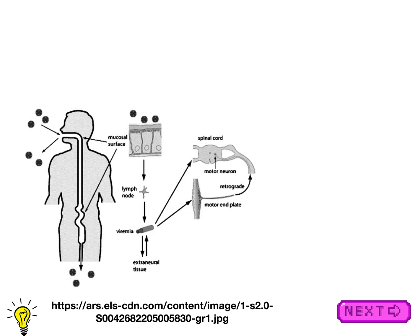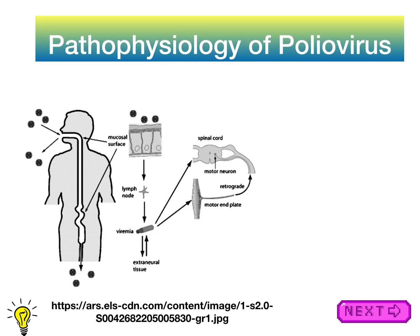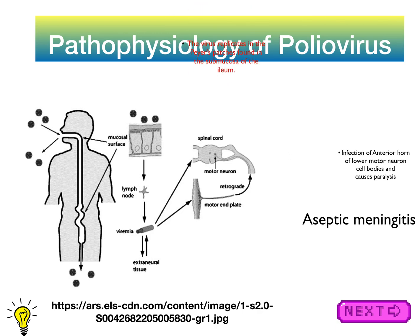Looking at this diagram, the pathophysiology is as follows: the virus initially replicates in the tonsils or the Peyer's patches — tonsils also have lymphoid tissue. The virus can then spread to the blood and across the blood-CNS barrier to the anterior horn of the spinal cord. Because of initial replication in the tonsils, the virus can actually also spread by respiratory secretions, as well as the usual fecal-oral route, early in the course of infection.